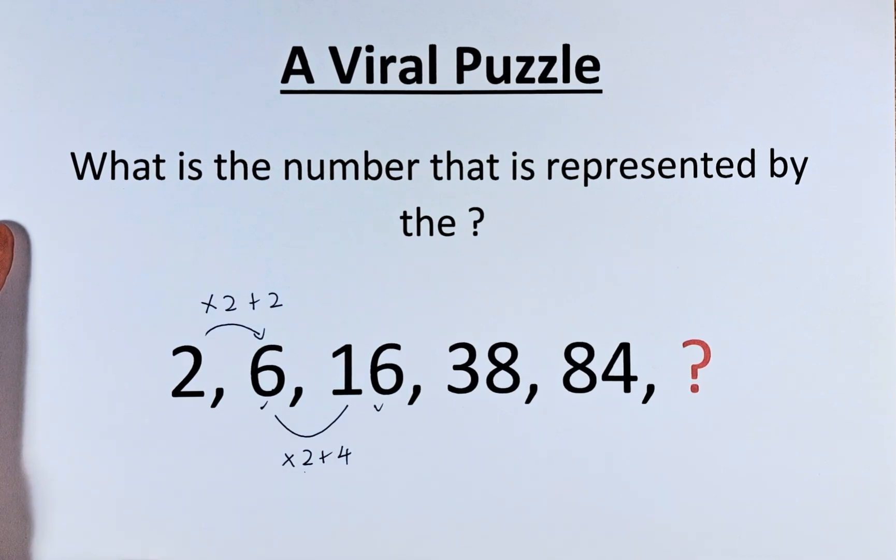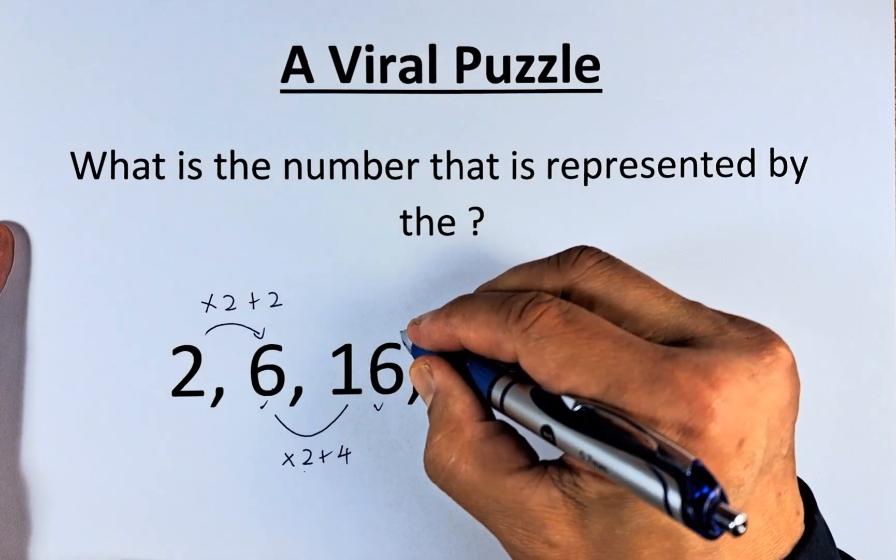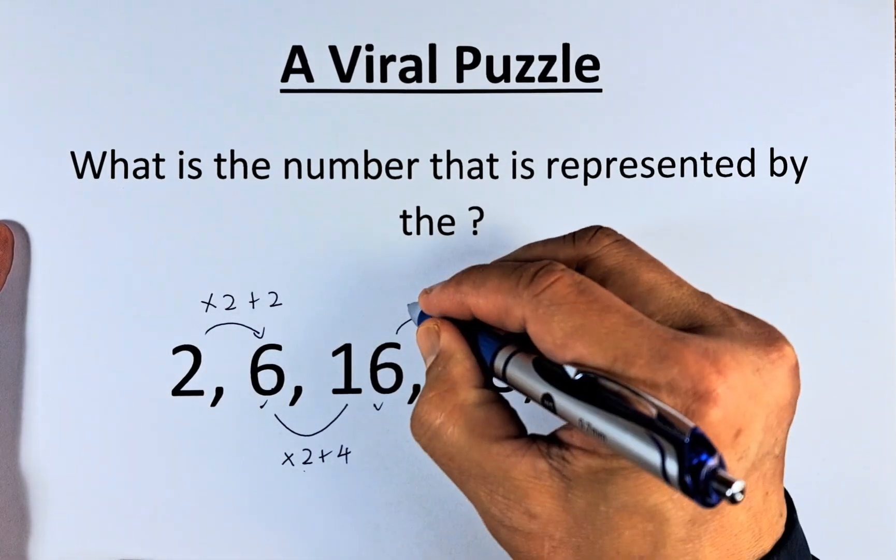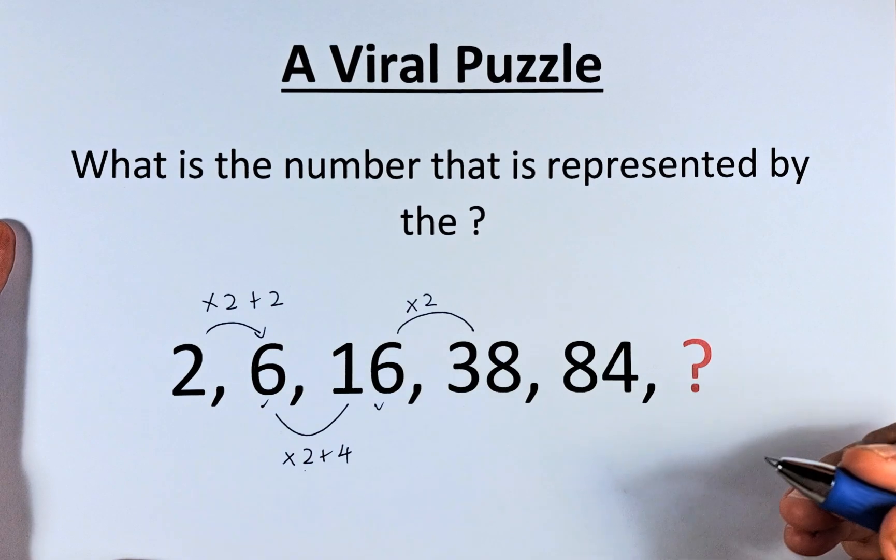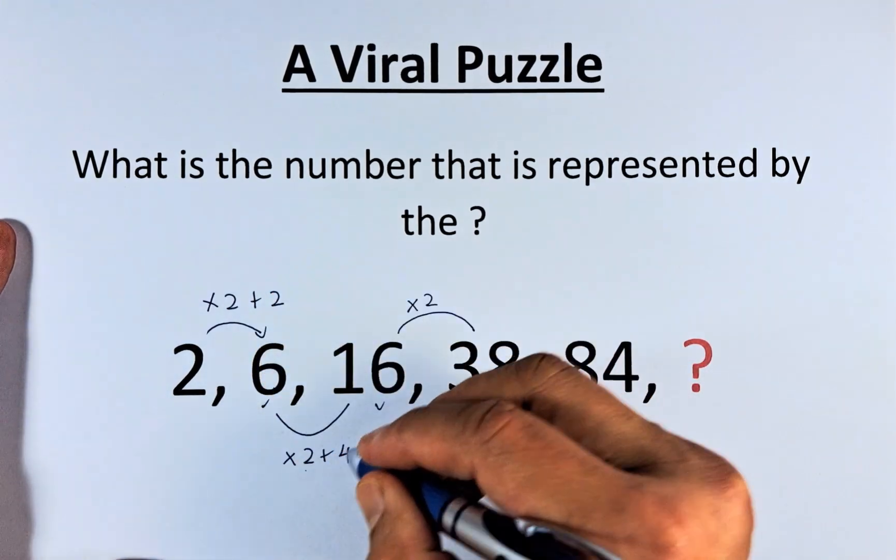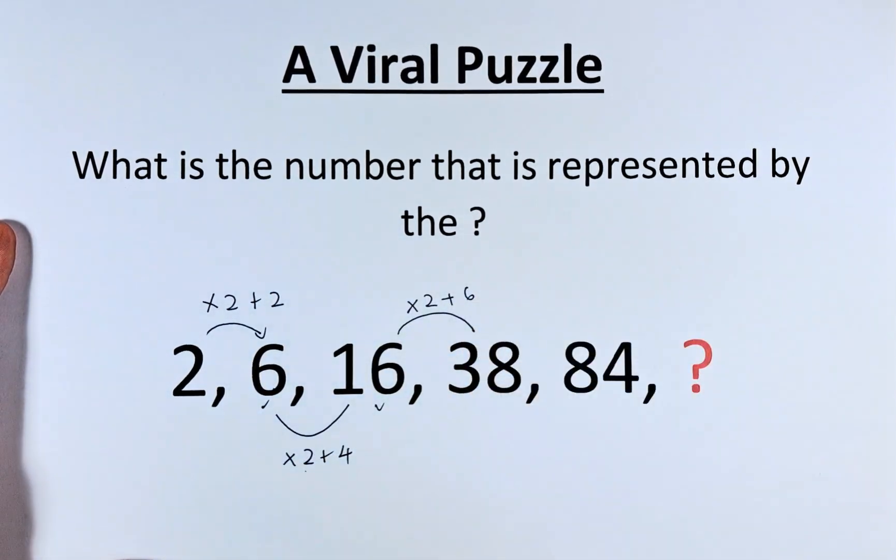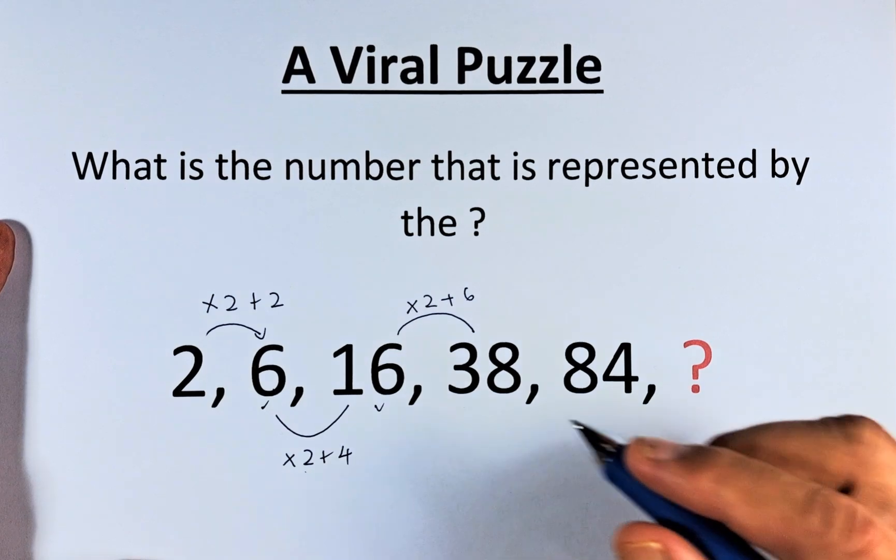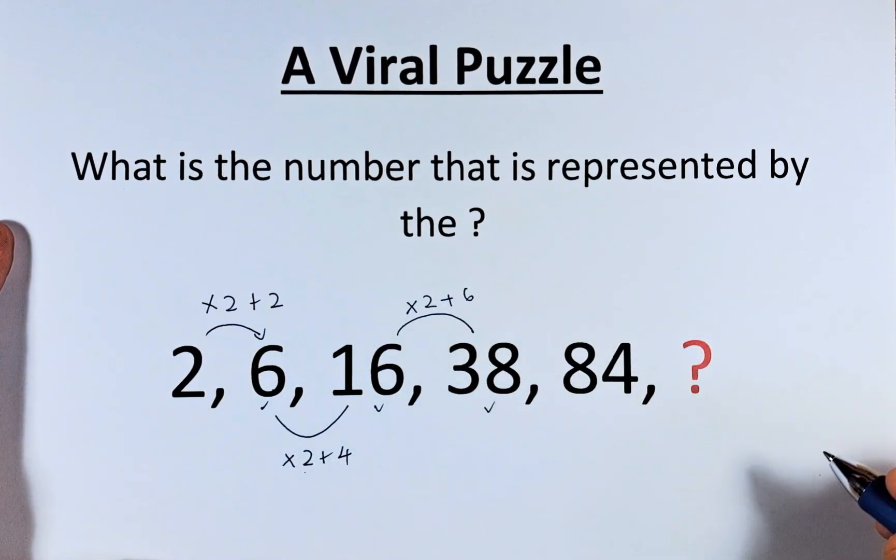You more or less understand how the technique is going to work, the pattern. So we are going to do the next one. 16 to 38 is going to multiply by 2, double it, and then this time because 2, 4, the next number has to be 6. 16 times 2 is 32, 32 plus 6 is 38.